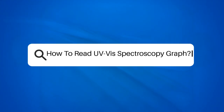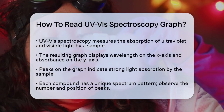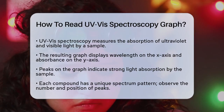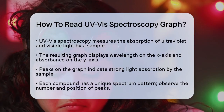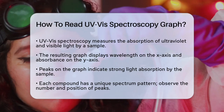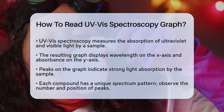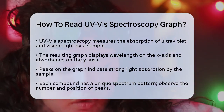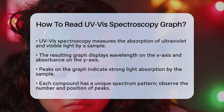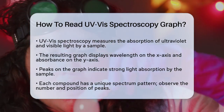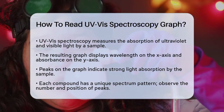How to read a UV-Vis spectroscopy graph. If you're working in a lab and need to understand the data from your UV-Vis spectroscopy experiments, you're in the right place. Let's break down how to read and interpret these graphs step by step. UV-Vis spectroscopy is a method that measures how much ultraviolet and visible light is absorbed by a sample. This absorption is plotted against the wavelength of the light, giving you a graph that can tell you a lot about the sample.